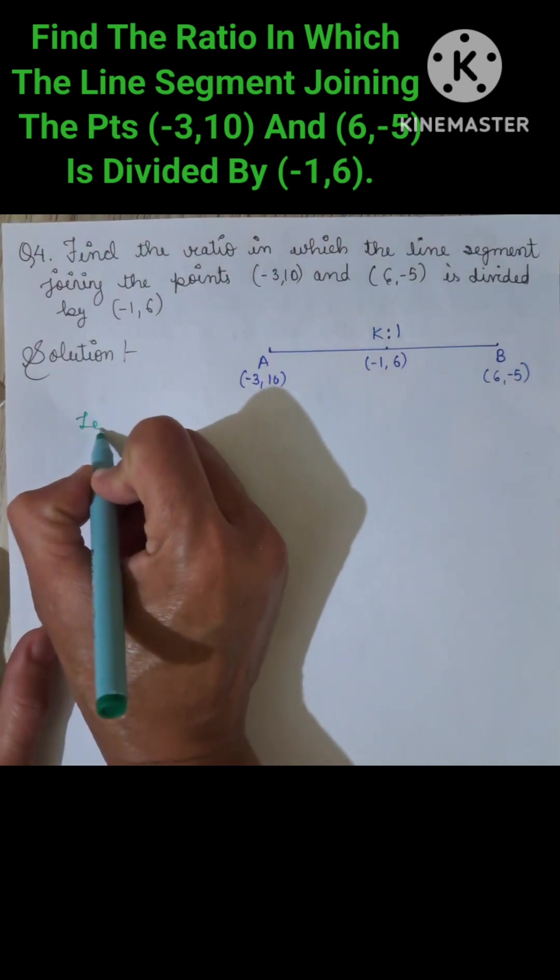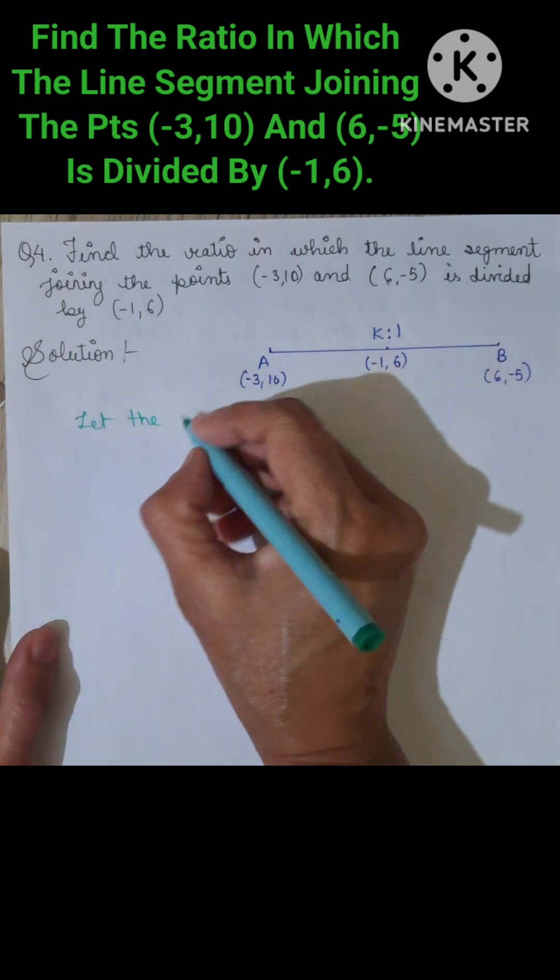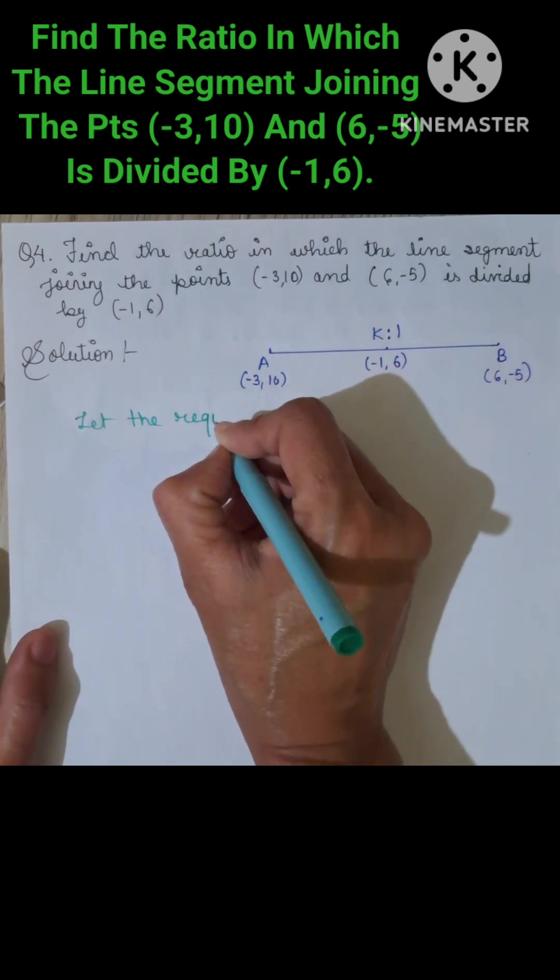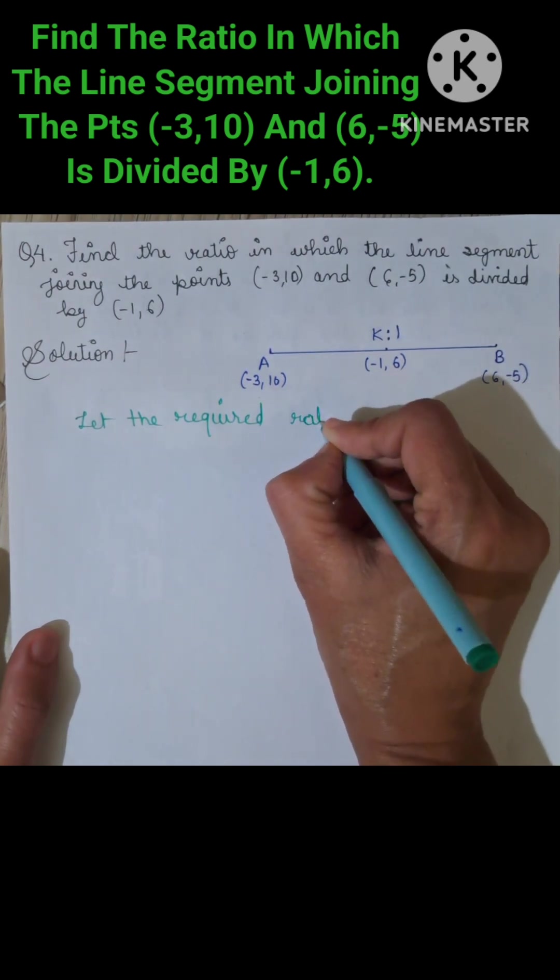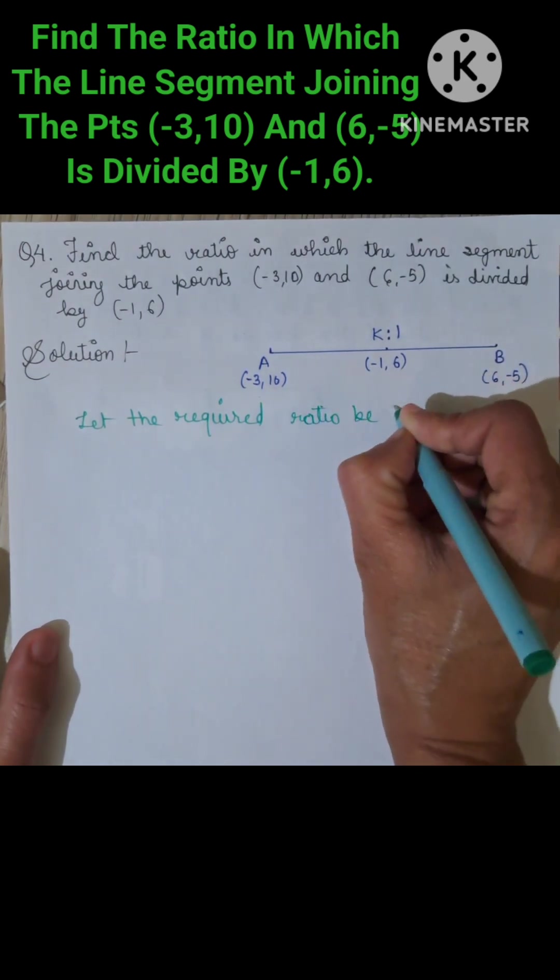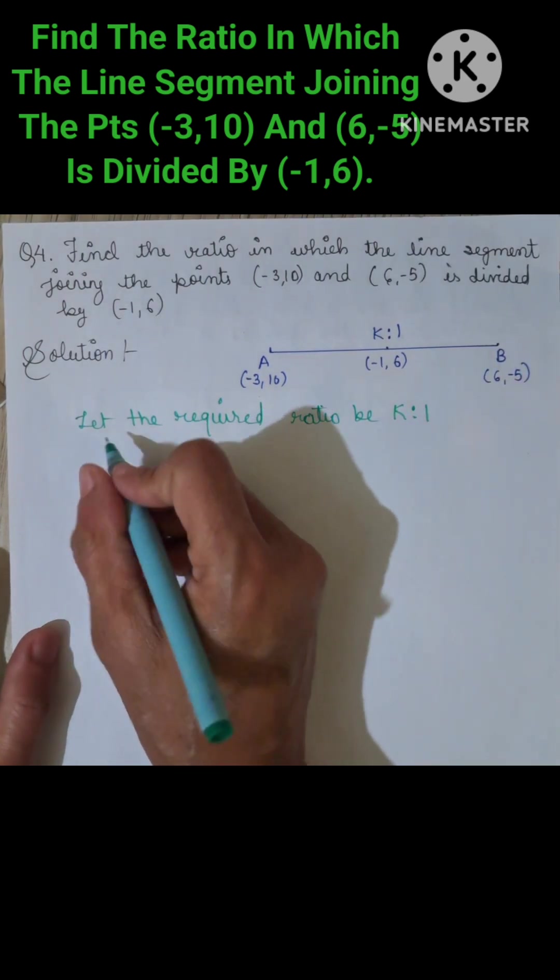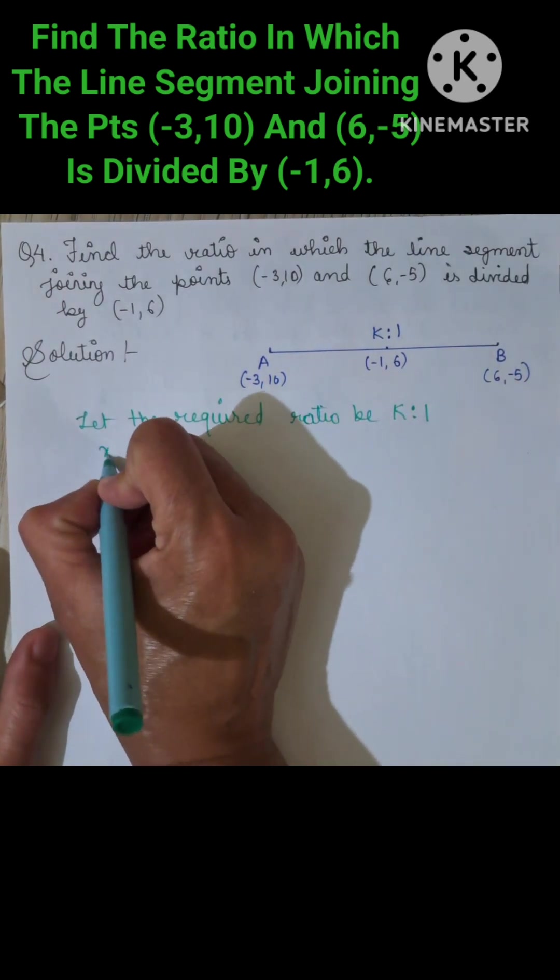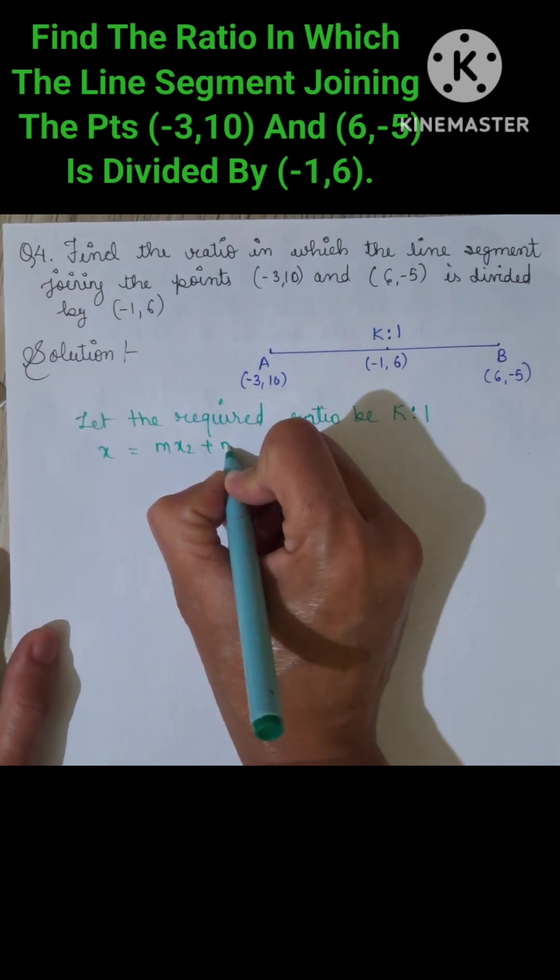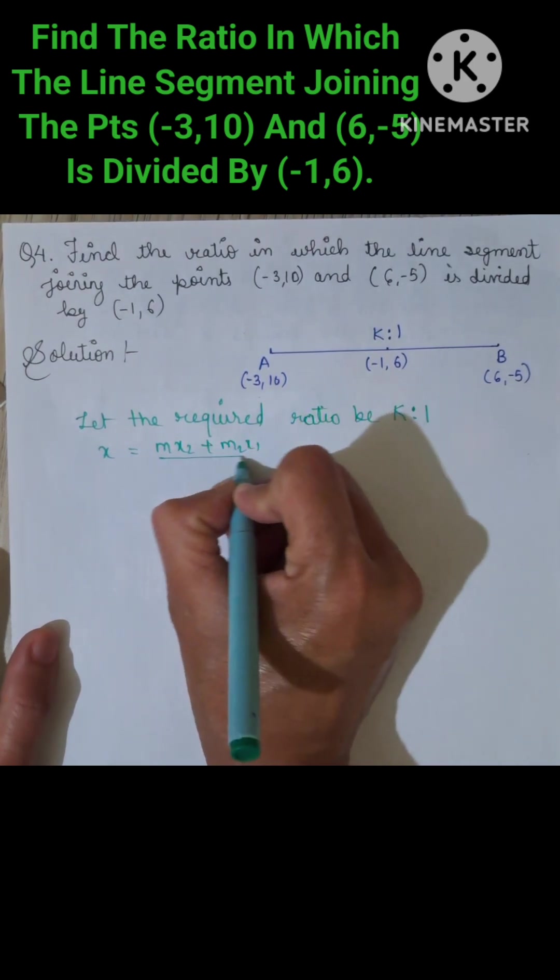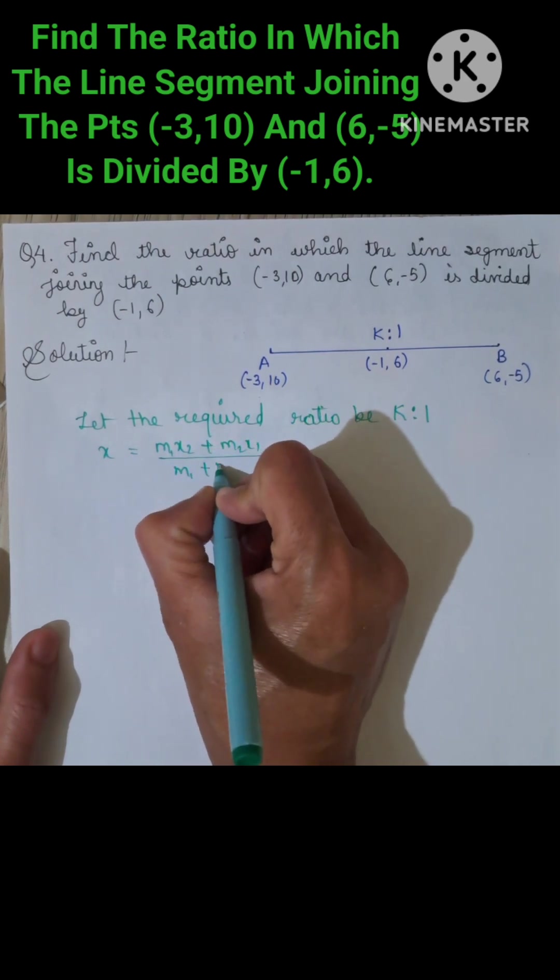Let the required ratio be K:1. Using the section formula, x equals (M₁X₂ + M₂X₁) divided by (M₁ + M₂).